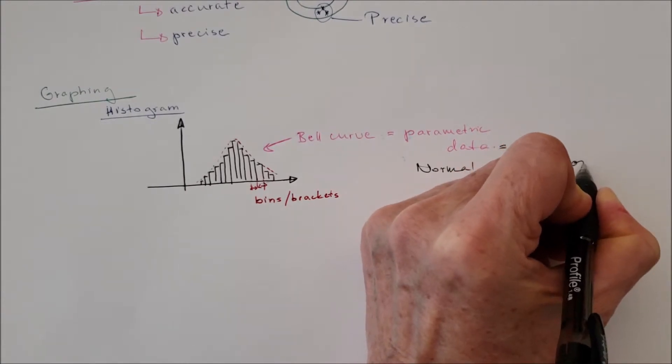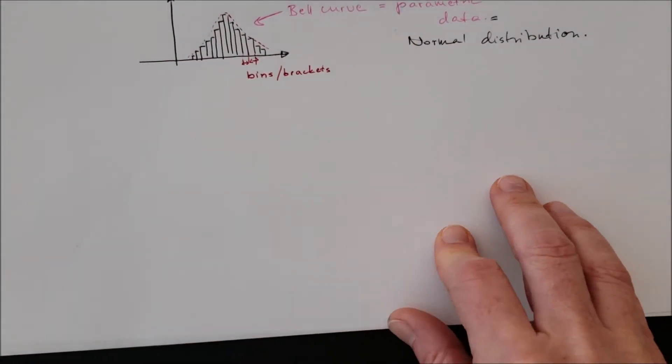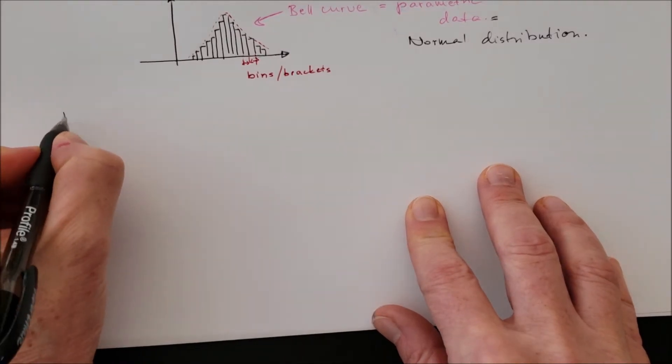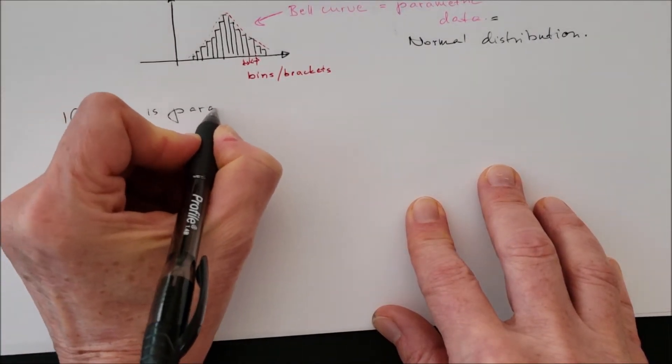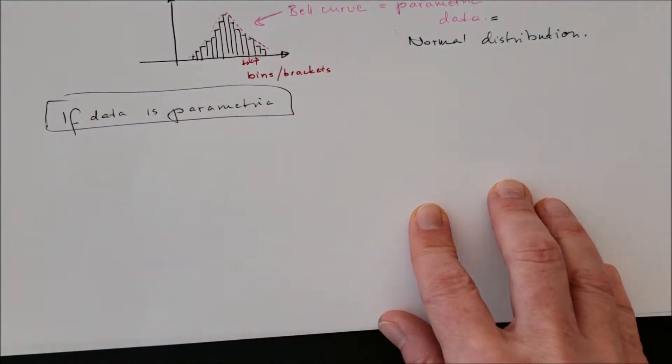If the data does not show a normal distribution or the data is non-parametric, well, we have to ask for a statistician. We don't get into it. If the data, on the other hand, is parametric, well, we can use descriptive statistics.